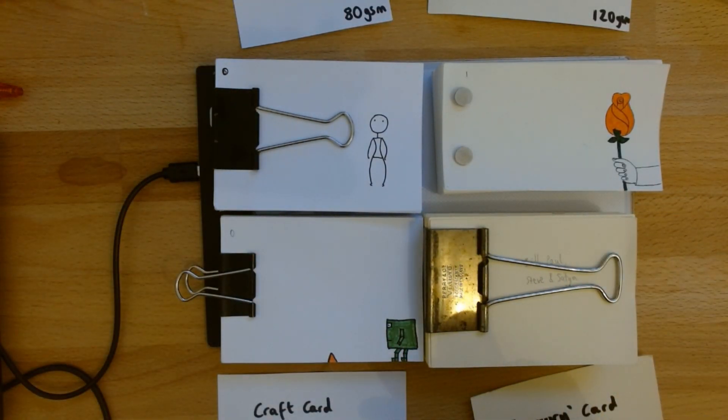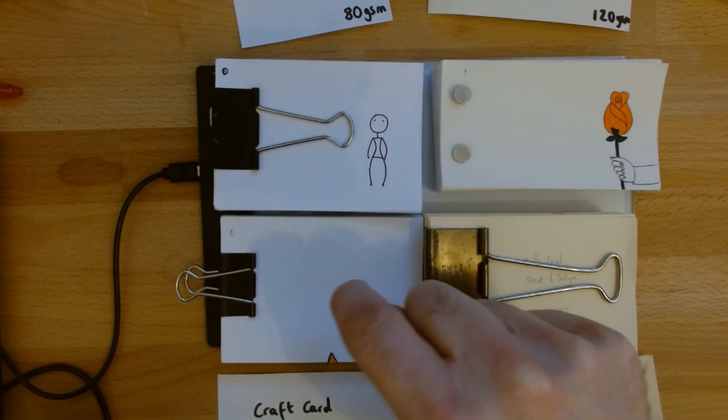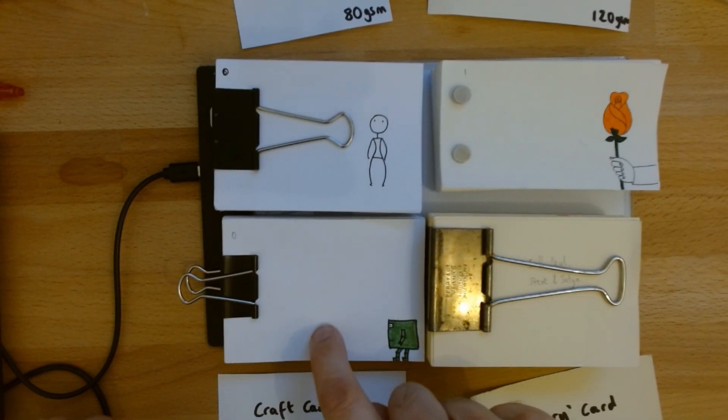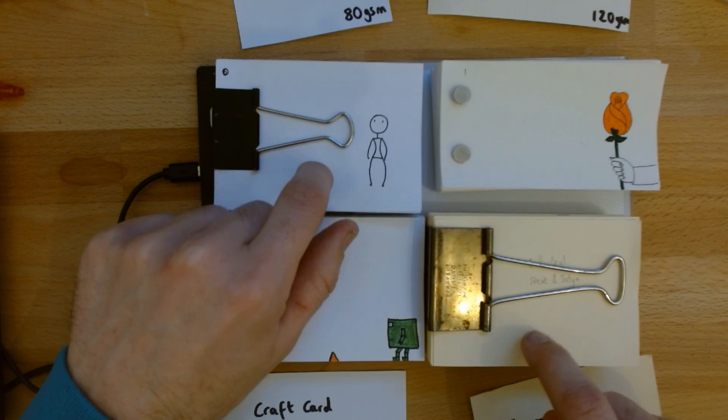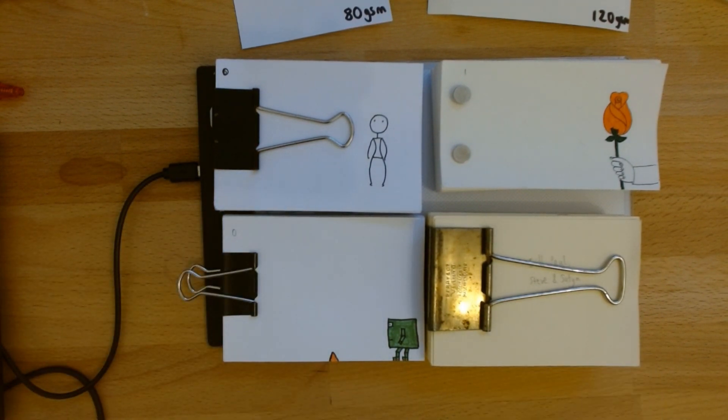So I would say, in terms of flippability, this is the winner, followed by this is a close second, and then these two are in a distant joint third.